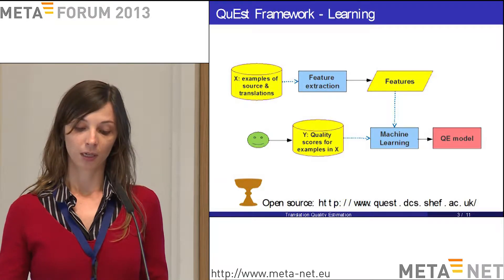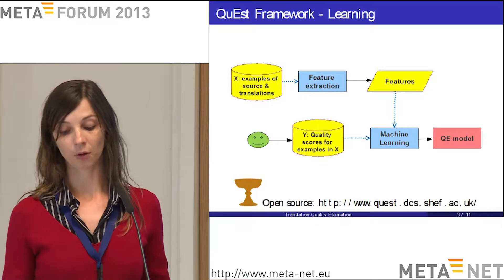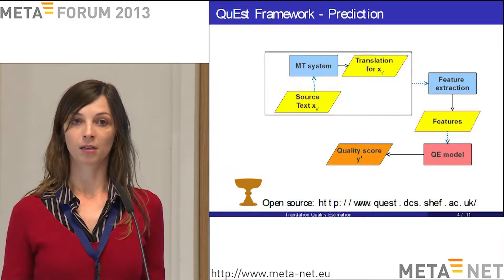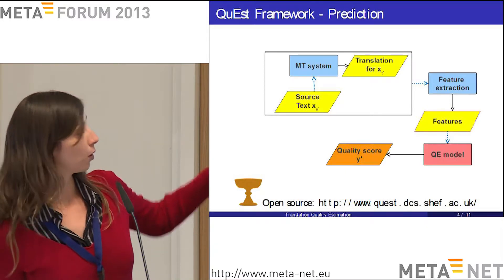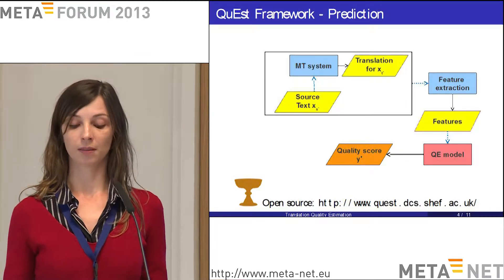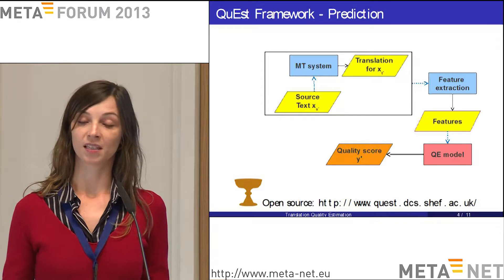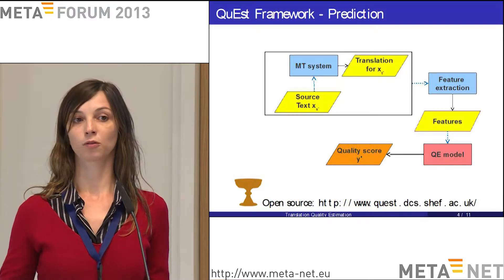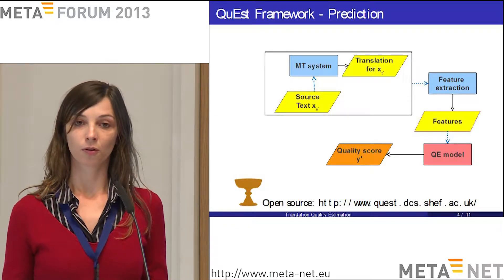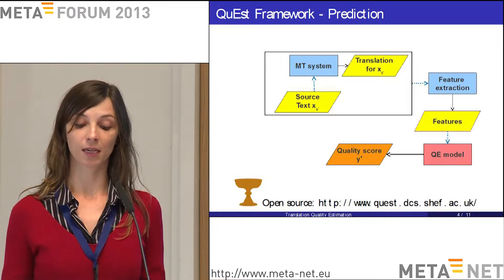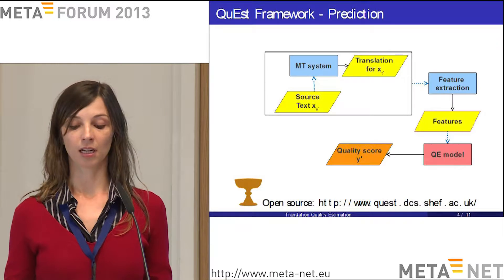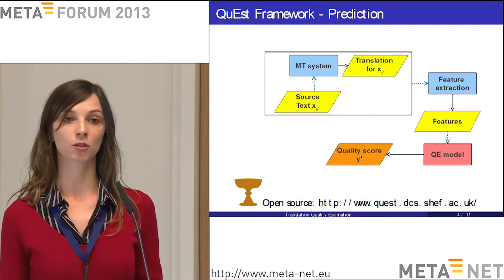To illustrate quality estimation, we have a framework called QuestText. We provide as input examples of translations and input texts — the top yellow box. We also provide labels for these examples indicating quality, such as post-editing time or an accuracy score on a one-to-five scale or fluency. We extract features — descriptors of quality — for these examples, then apply algorithms to learn a model that combines these different types of information and assigns weights to them, resulting in a quality estimation model shown in the red box.